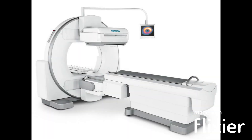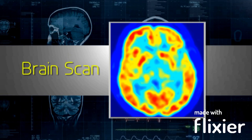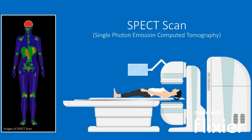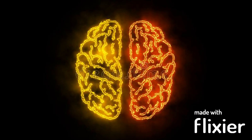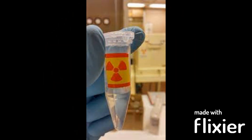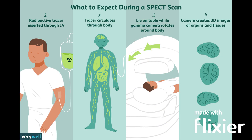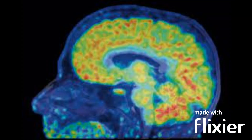نیوکلیر برین سکین، جسے نیوکلیر میڈیسن برین سکین یا اسپیکٹ (سنگل فوٹون ایمیشن کمپیوٹیڈ ٹوموگرافی) برین سکین بھی کہا جاتا ہے، یہ ایک ایمیجنگ ٹیسٹ کی قسم ہے جو دماغ کی تصاویر بنانے کے لیے تھوڑی مقدار میں ریڈیو ایکٹیو مٹیریل استعمال کرتی ہے۔ اسکین کے دوران ریڈیو ٹریسر آپ کے بازو کی رگ میں انجیکشن لگایا جاتا ہے، جو آپ کے خون کے بہاؤ کے ساتھ دماغ میں پھیل جاتا ہے۔